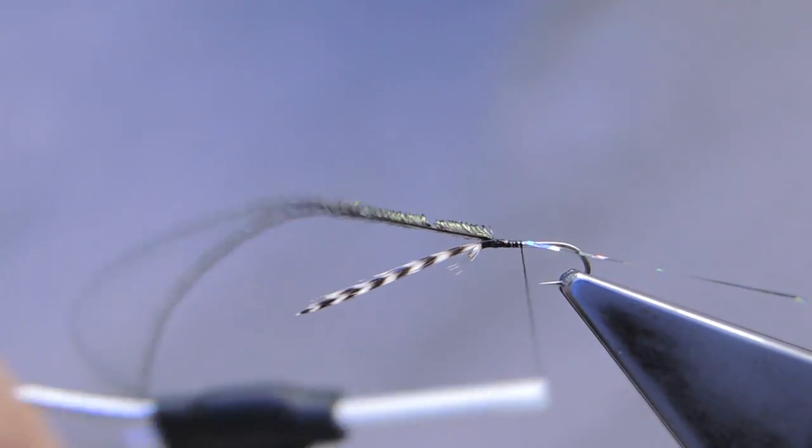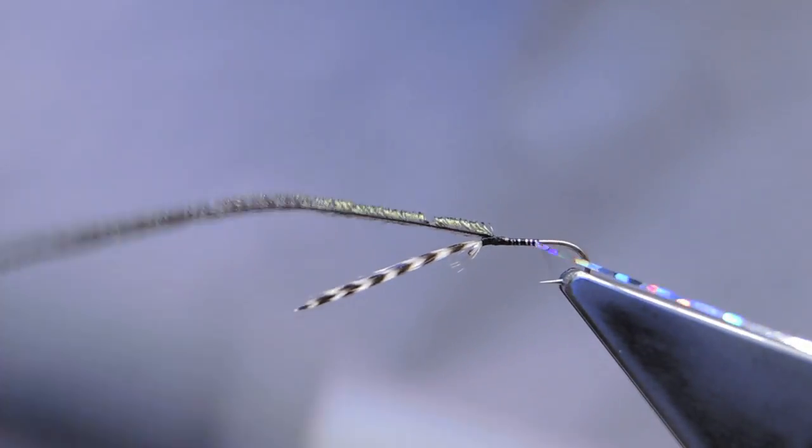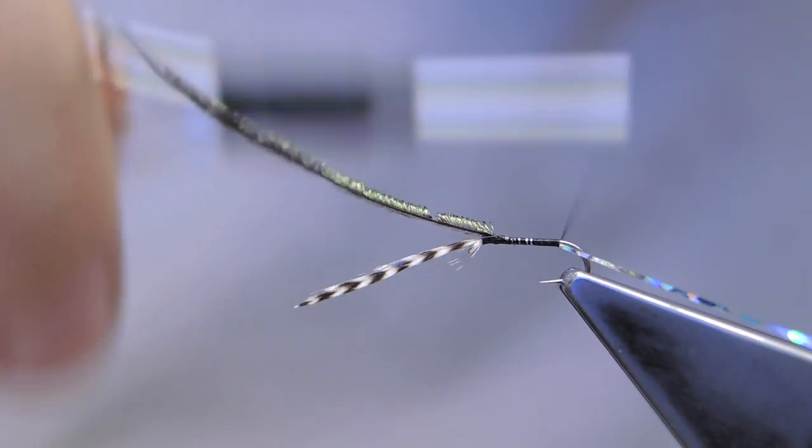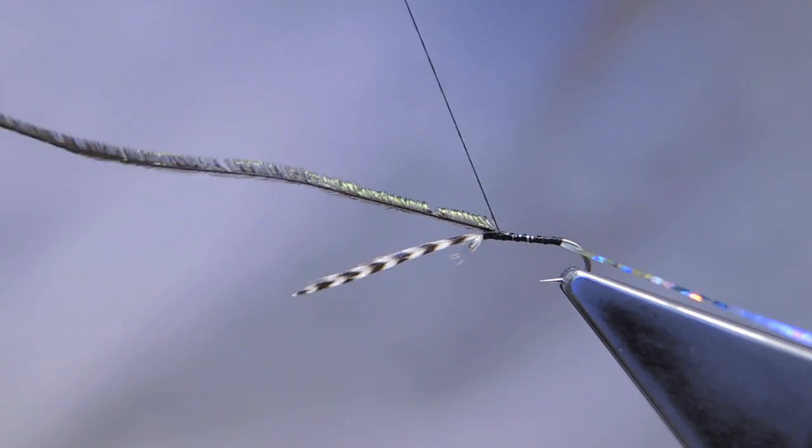So I'll lash down, then the thread runs to the end of the shank. And then spirals back, towards the eye.